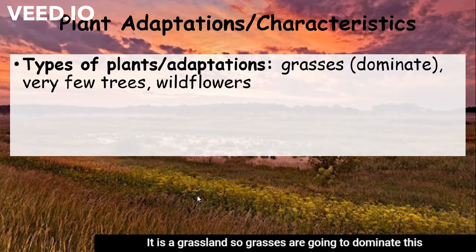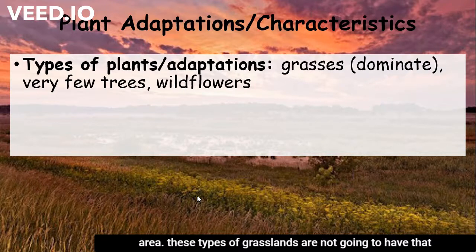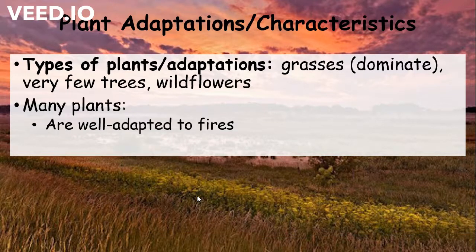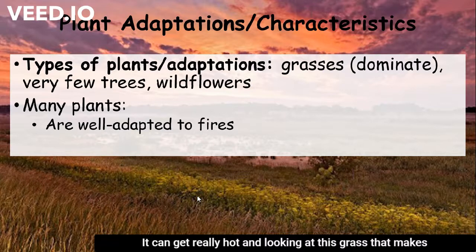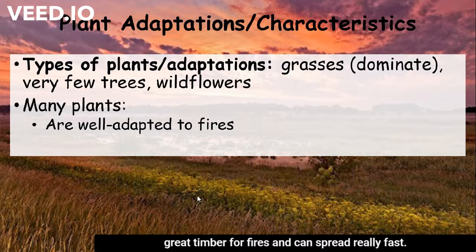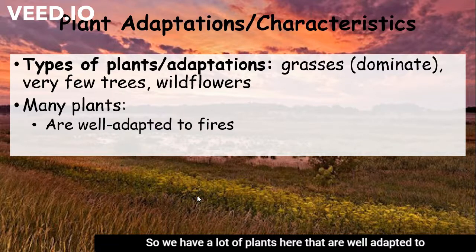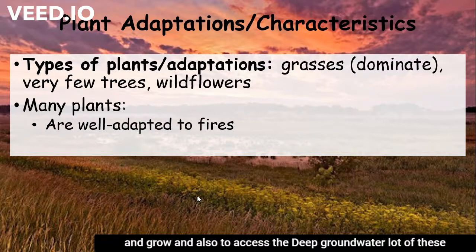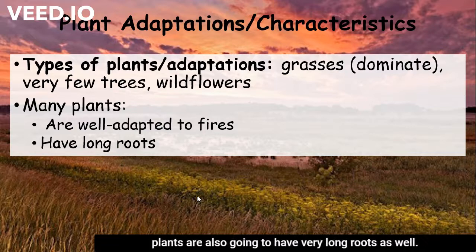It's a grassland, so grasses are going to dominate this area. These types of grasslands are not going to have that many trees, and they're going to have a lot of wildflowers. It can get really hot, and dry grass makes great tinder for fires to spread really fast. So we have a lot of plants here that are well adapted to fires, and some actually depend on fires in order to germinate and grow. Also, to access the deep groundwater, a lot of these plants are going to have very long roots as well.